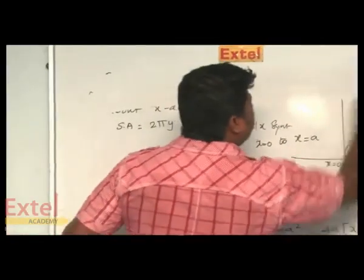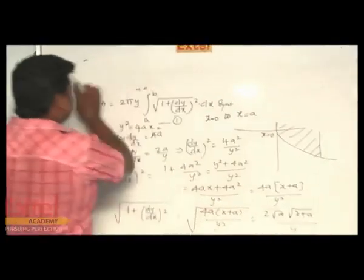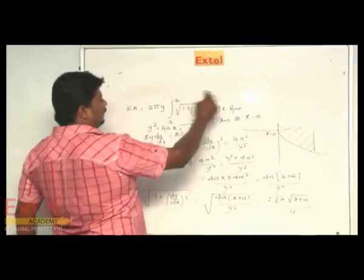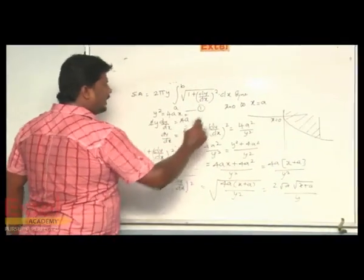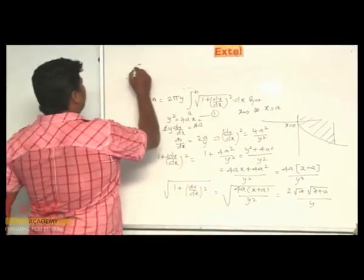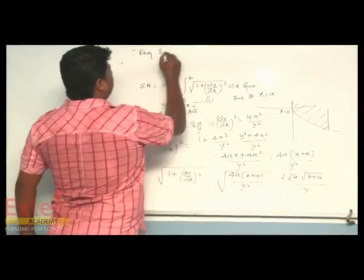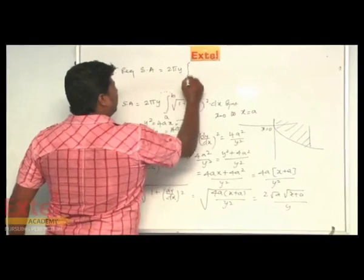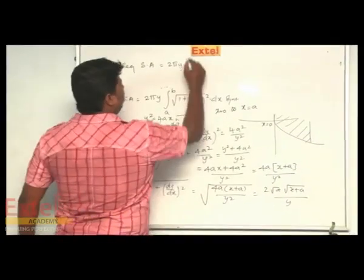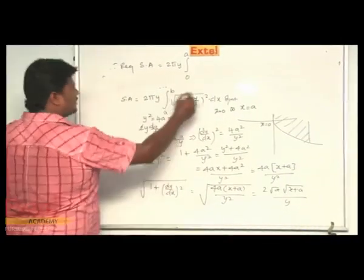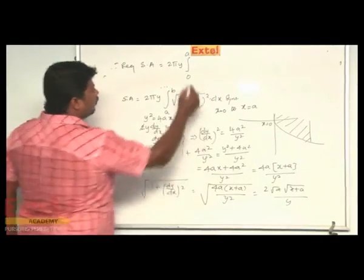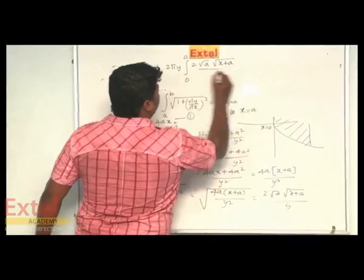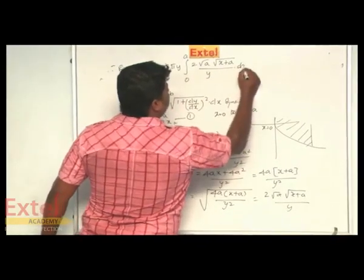Substituting into the surface area formula: surface area equals 2π y, integral from 0 to a, times square root of 1 plus (dy/dx) squared, into dx. Substituting our value of 2 root a times root(x plus a) divided by y, into dx square units.